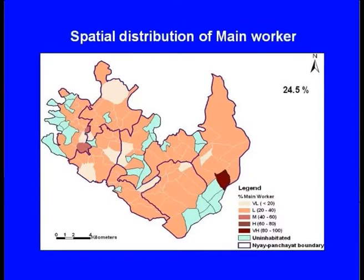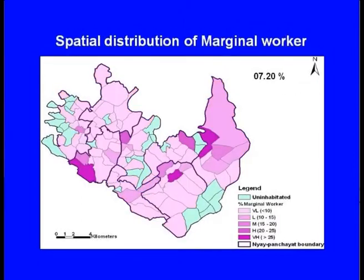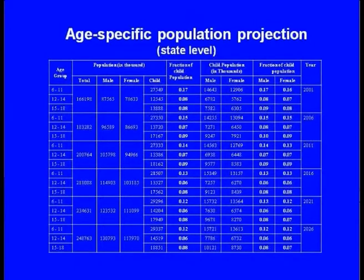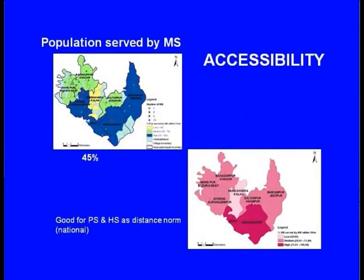The sex ratio in this area is 872. The participation ratio — the working proportion — is about 31.5 percent, which is a very low value. Main workers are only 24.5 percent, and marginal workers — those who work as hired labor on fields — are about 7 percent. Based on this, population projections have been carried out at the state level for different years, and using these, the educational disparities have been worked out, showing how the middle school is serving the population and which villages are being served by the middle school.